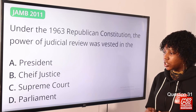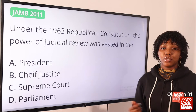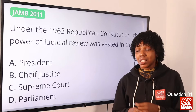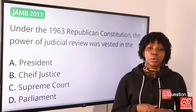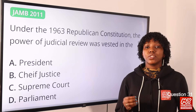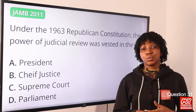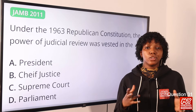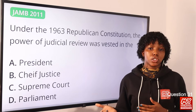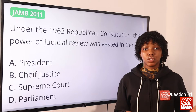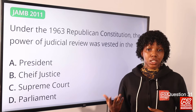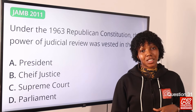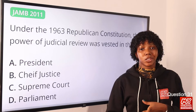Question 31: Under the 1963 republican constitution, the power of judicial review was vested in the — the answer is the Supreme Court. This means the Supreme Court was given the power to check excesses or unconstitutional actions of the executive or legislative branches. The answer is option C, Supreme Court.